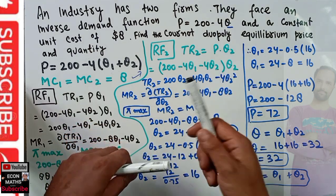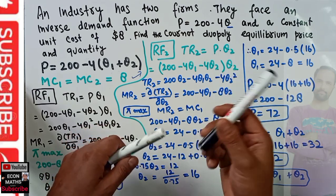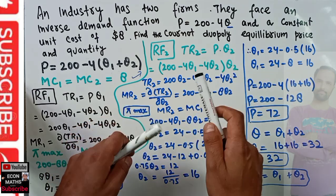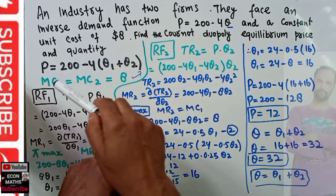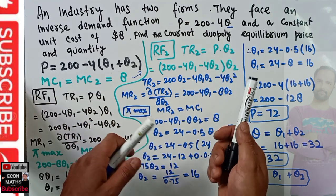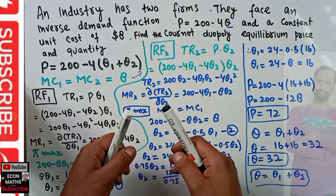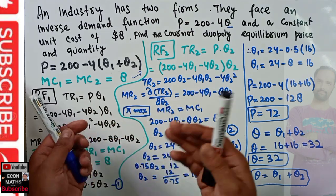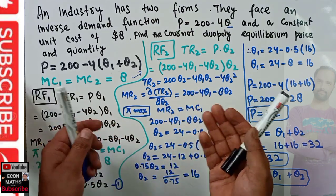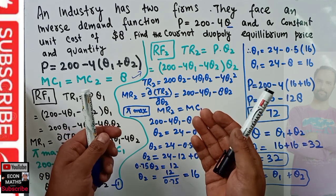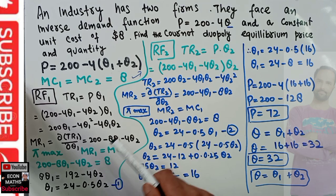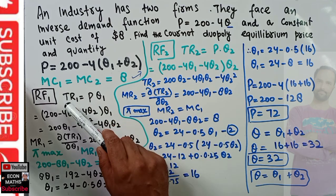To find out the market equilibrium price and output in the Cournot duopoly, we first need to find the reaction function of each firm. The reaction function of firm 1 simply tells us how much output firm 1 will decide to produce, given that firm 2 has decided its output value. To find it, we first need the total revenue function of firm 1.